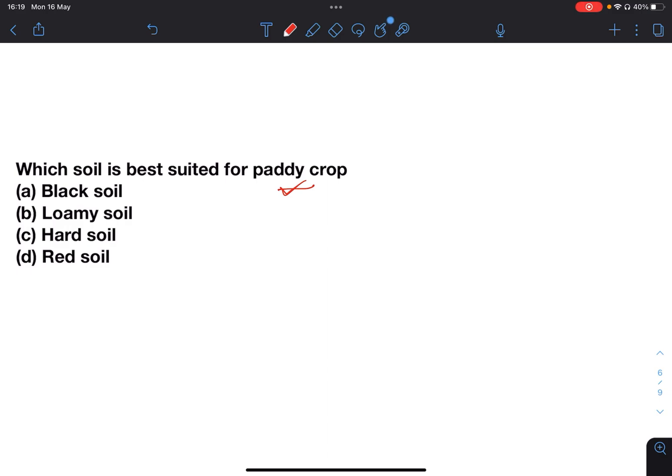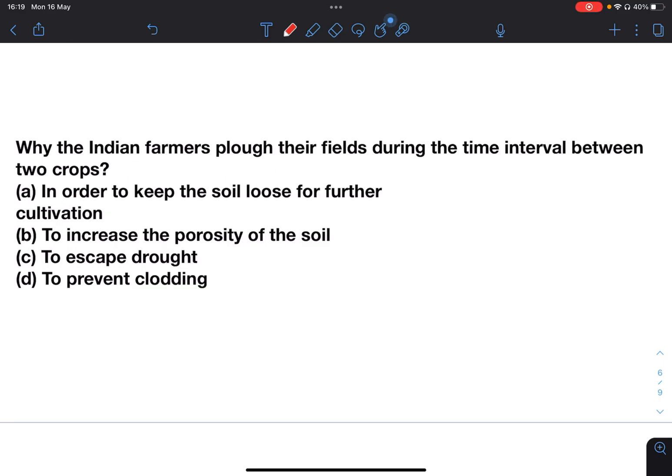Why do Indian farmers plow their fields during the time interval between two crops? Options: in order to keep the soil loose for further cultivation, which is true; to increase the porosity of the soil; to escape drought; or to prevent clodding. Plowing the field prevents clodding, meaning clumping of the soil. So both A and D are true. Answer in most websites is given D. Post your answer in the comment section.